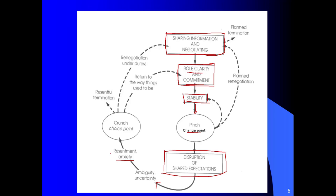And if this continues, there can be some resentment and anxiety on everyone's part, the employer and the employees. And as this grows, we come to a crunch point or I like to call it a choice point. The crunch point is where the disruption of the shared expectations continue to grow and continue to grow to a point where the employee cannot deal with them any longer.